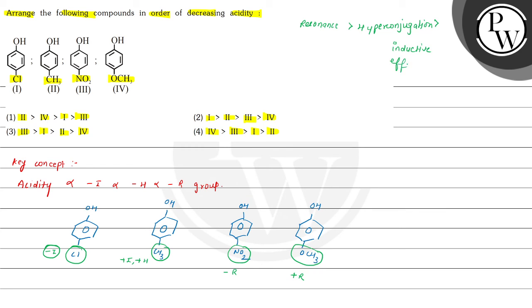So these -I, -H, and -R groups will increase the acidity, whereas +I, +H, and +R groups decrease the acidity.